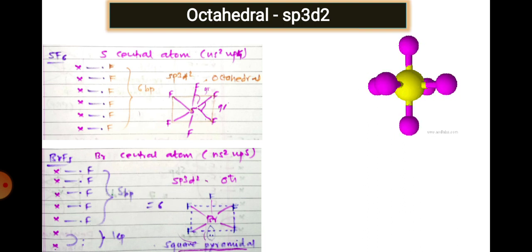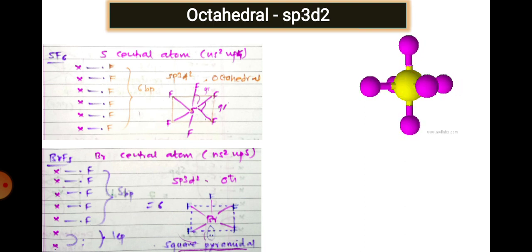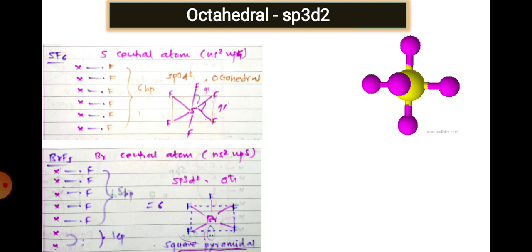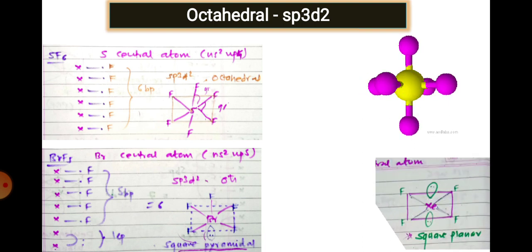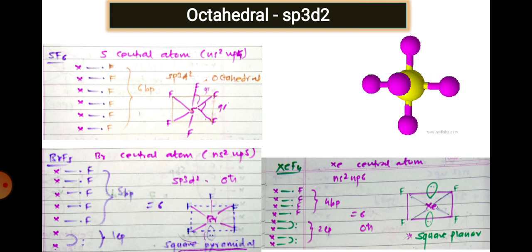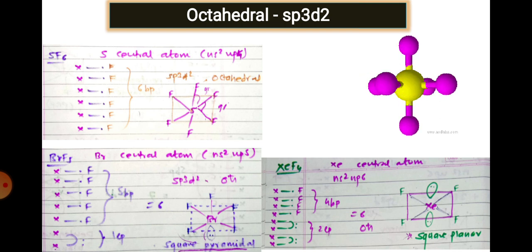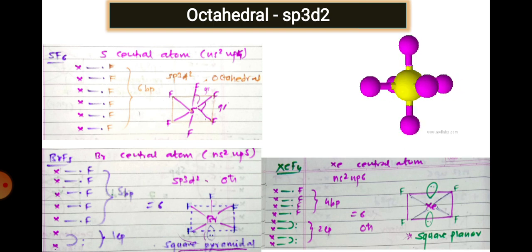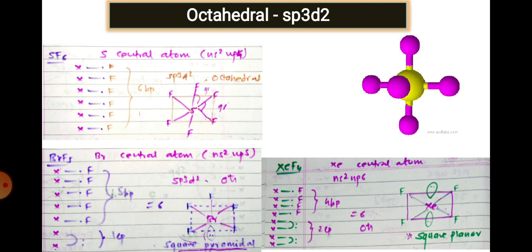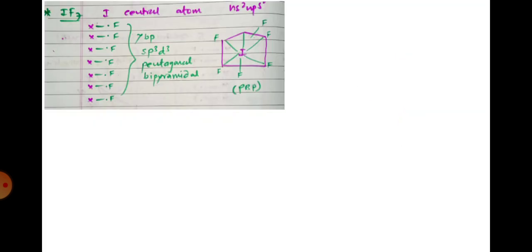BrF5 is an interhalogen compound with bromine as central atom — seven valence electrons. Five bond pairs are formed with fluorine, and one lone pair remains. Total = 5 + 1 = 6, so sp3d2 hybridization. Geometry is octahedral but shape is square pyramidal — one axial position is replaced by the lone pair. Similarly for XeF4, xenon has eight electrons, four shared with fluorine and two lone pairs. Total = 4 + 2 = 6, sp3d2, octahedral geometry, square planar shape.